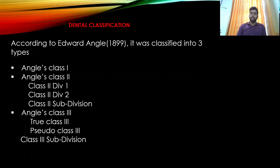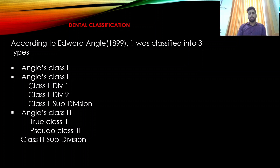Class 2 Division 1 is characterized by the distobuccal cusp of the maxillary molar falling in the buccal groove of the mandibular molar with proclined upper incisors. Class 2 subdivision means Class 2 molar relation on one side and Class 1 molar relation on the other side.